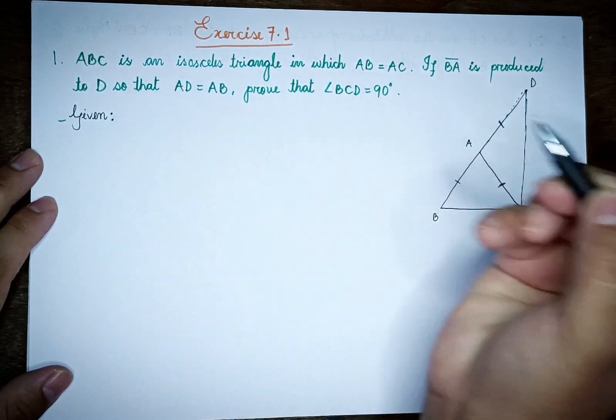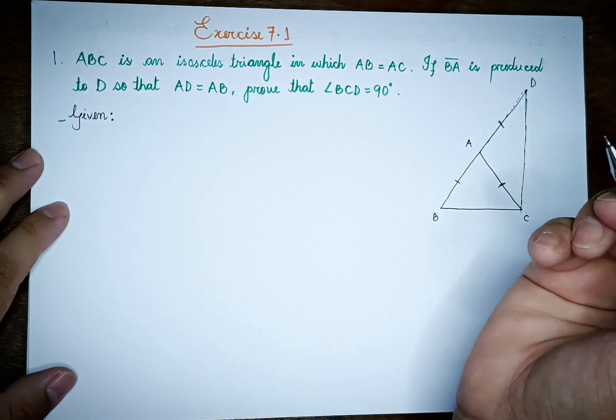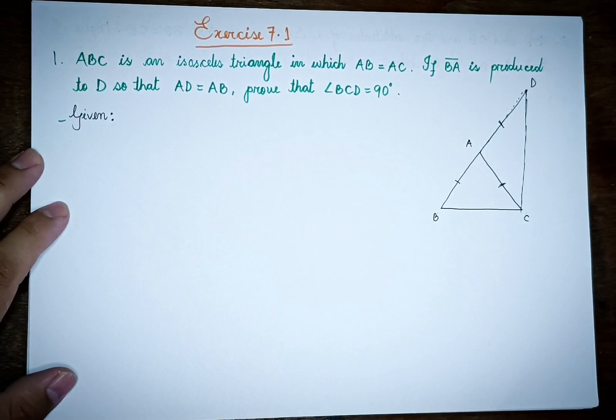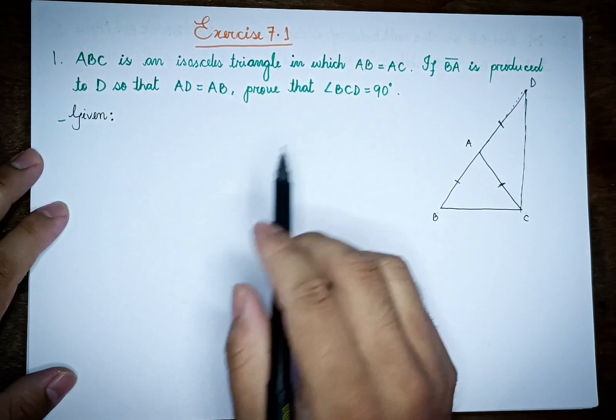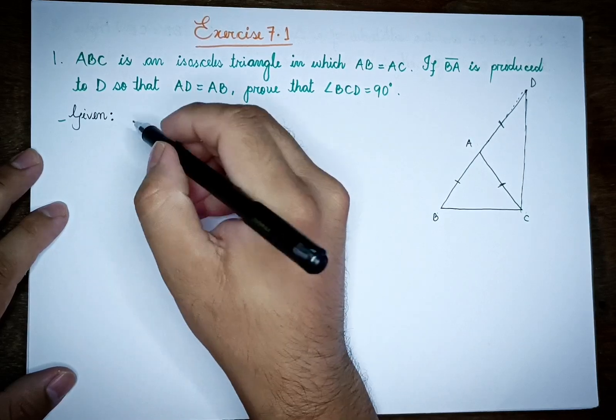Given that the isosceles triangle ABC has AB equal to AC.